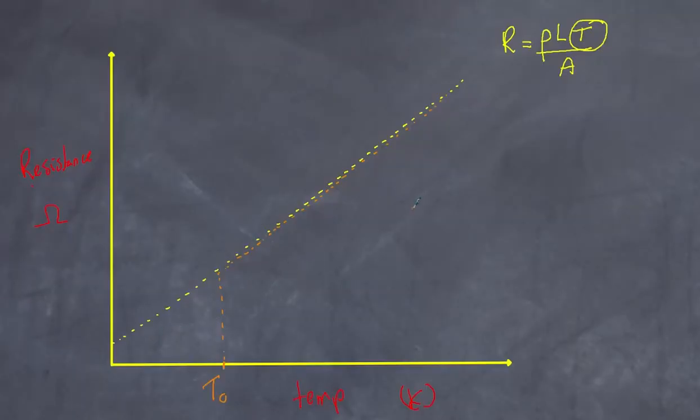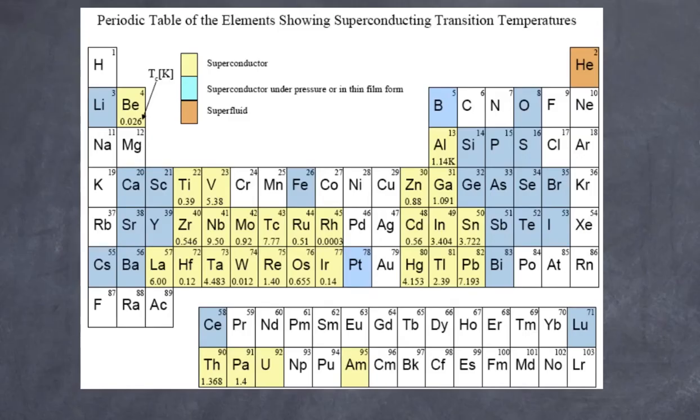That gives us the setup for how the BCS theory came about. Before explaining the BCS theory, I want you to understand that the theory describes what we refer to as type 1 superconductors. Type 1 superconductors are materials that are metals or metalloids that already have some conductivity at room temperature and display superconductivity at really low temperatures.